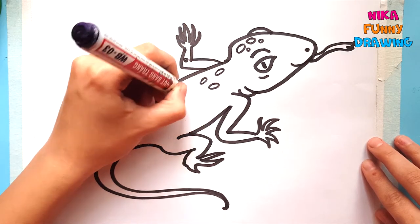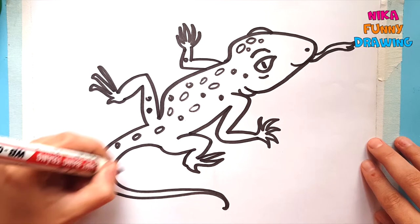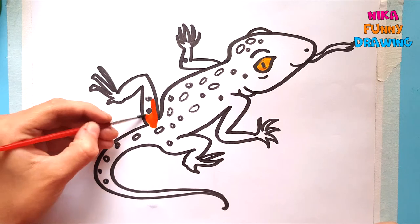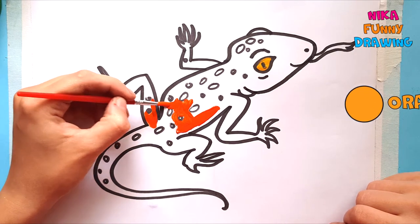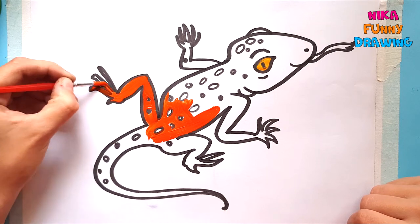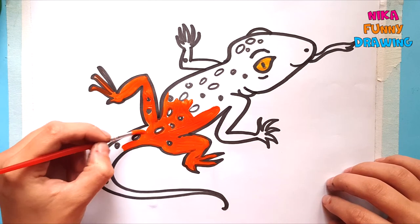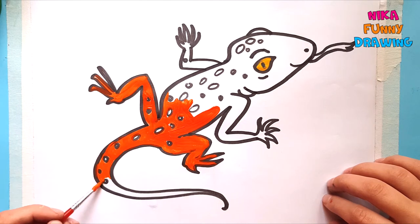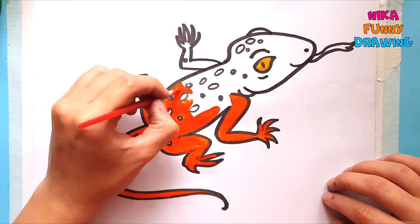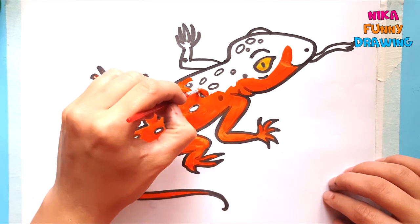And small circles on its back. We will use yellow color to paint its eye. Our lizard is orange. Let's go. We are painting our lizard with orange color.